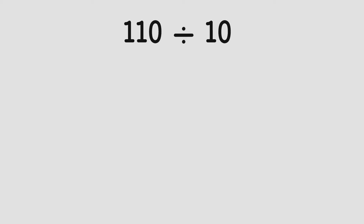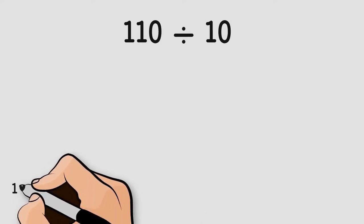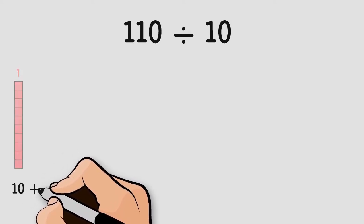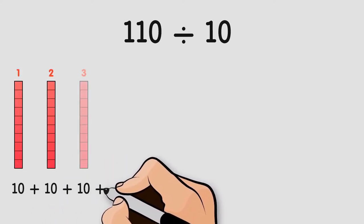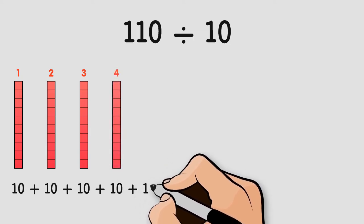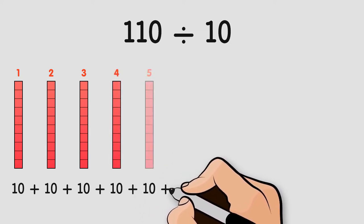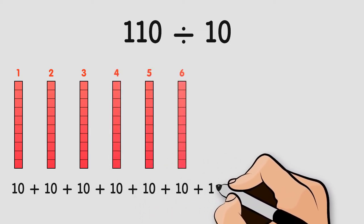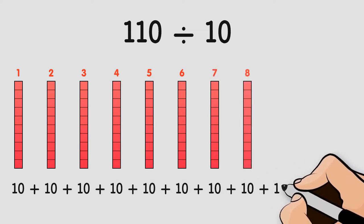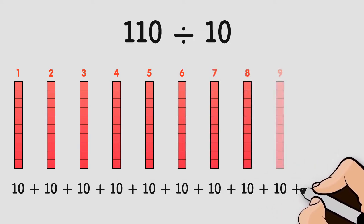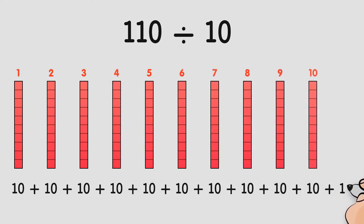One group is 10, two groups is 20, three groups is 30, four groups is 40, five groups is 50, six groups is 60, seven groups is 70, eight groups is 80, nine groups is 90, ten groups is 100, and finally eleven groups is 110.